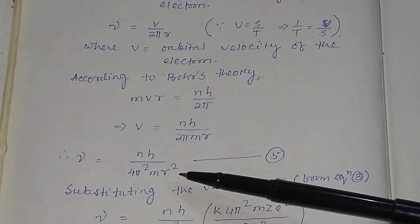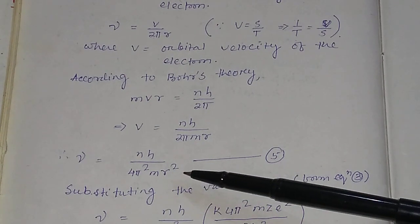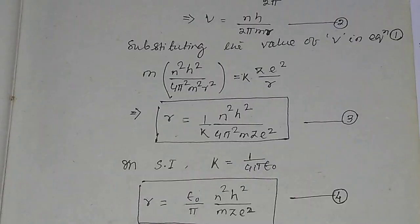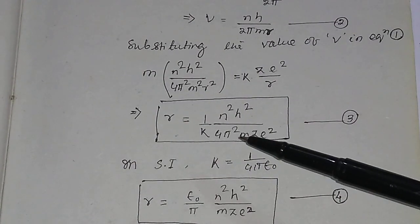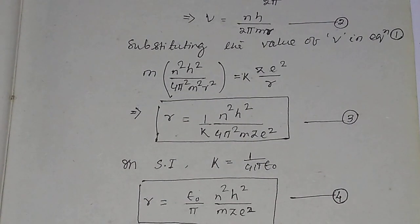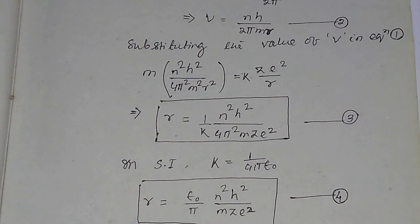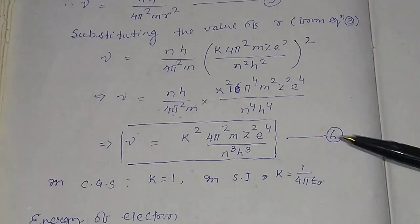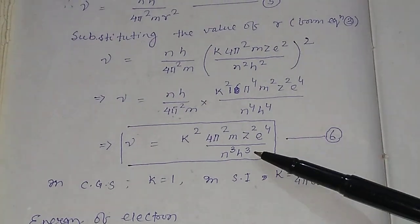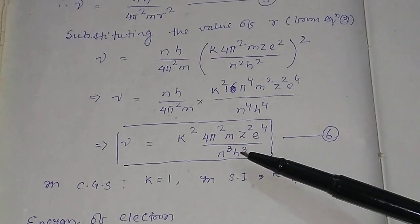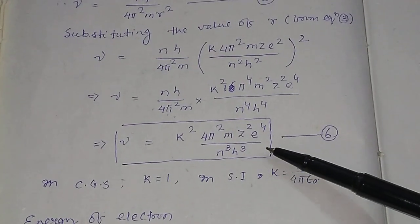Since we have already derived the expression for R, substituting the value of R into the frequency equation gives the final formula for the orbital frequency of the electron.